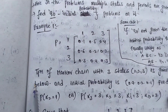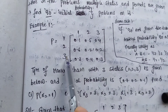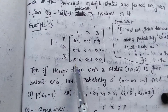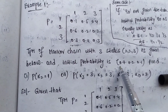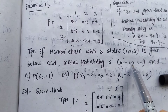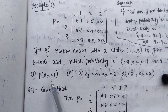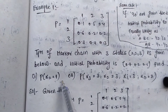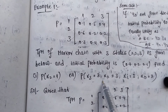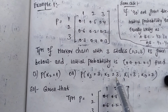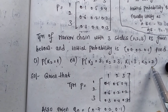Let us consider an example problem. Here, the TPM of a Markov chain with 3 states — 1, 2, 3 — is given. The initial probability is [0.7, 0.2, 0.1]. We are asked to find P(X2 = 1), and second, P(X3 = 3, X2 = 3, X1 = 3, X0 = 2).